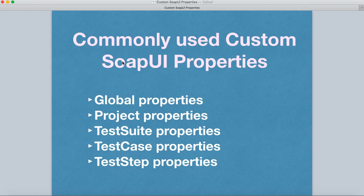The next important usage of properties is to hold authentication credentials. If your web service requires authentication to hit any of its methods, those credentials can be stored using properties. Similarly, you can use properties to share session IDs during test execution — for example, storing a session ID received in a response and passing it on to the next web service to achieve end-to-end testing in SOAP UI.